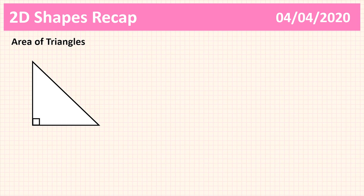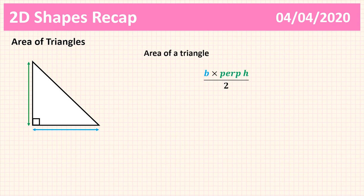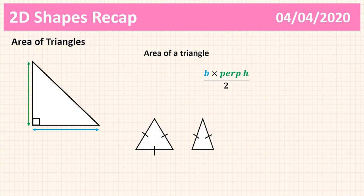Triangles are pretty straightforward. This is a right-angle triangle, which makes our life a little easier. For triangles we have a base and a perpendicular height, and the area is base times perpendicular height divided by 2. We will always need a perpendicular height. If we don't have one, it's easy to find — you can measure it on the inside or the outside of the shape, from the base to the highest point of the triangle. We are not looking for slanted heights; heights must be perpendicular, at 90 degrees to the base.